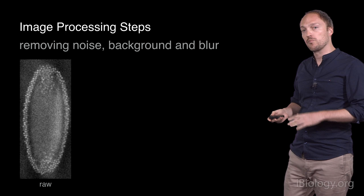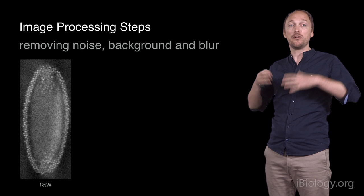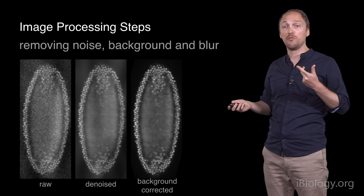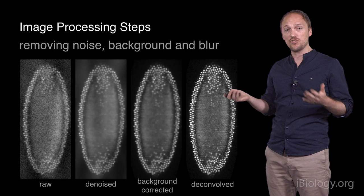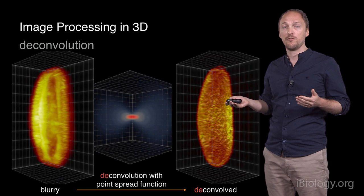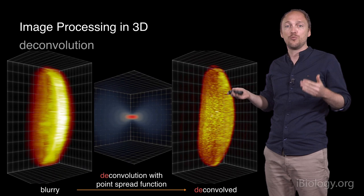So, what are the typical processing steps of these 3D, 4D, multidimensional datasets? So, first you have to denoise the data. Then you have to correct for the background. And then you have to deconvolve, typically, the data. Other possible subsequent steps are, for example, stitching and fusing the images together. Some of these processing steps fundamentally require to take into account the multidimensional nature of the data. For example, 3D deconvolution typically requires knowing the 3D structure of the point-spread function to reduce blur and out-of-focus light.